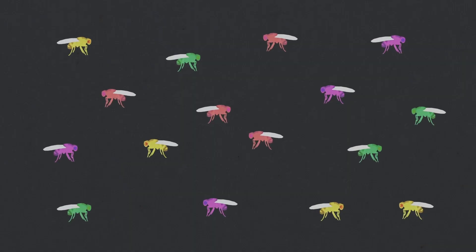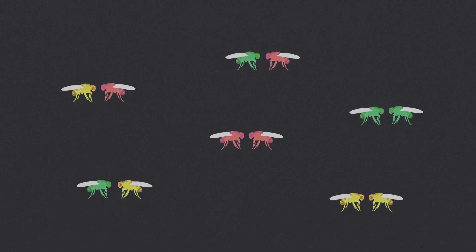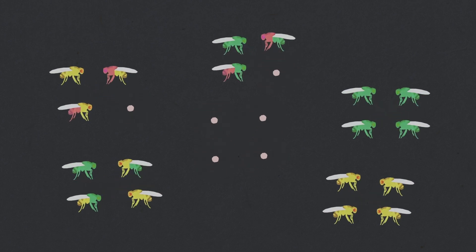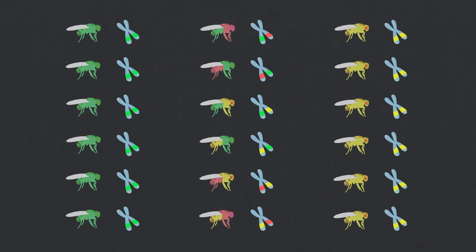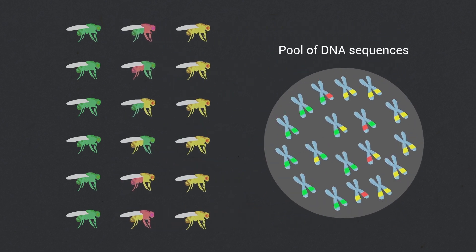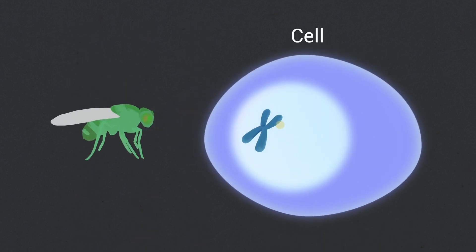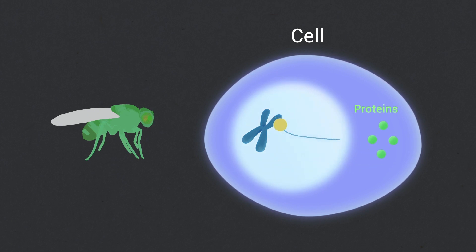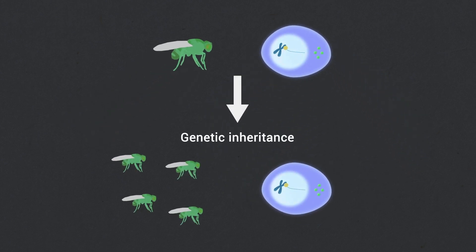The modern evolutionary synthesis postulates that evolution acts mainly via natural selection, operating on phenotypes, ultimately affecting the genetic diversity of populations and species. This diversity is proposed to be incarnated in the pool of DNA sequences of its individuals. In this DNA-centric vision of life and inheritance, DNA specifies organismal traits by driving synthesis of proteins and conveys information to future generations.